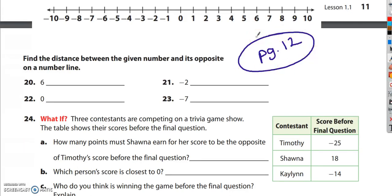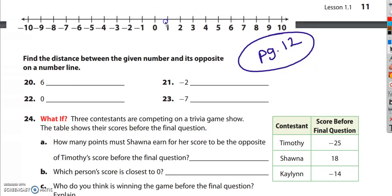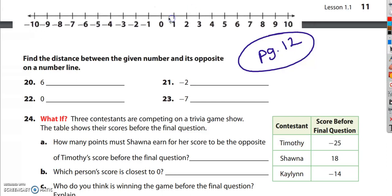Okay, the directions for 20 through 23 say, find the distance between the given number and its opposite on a number line. So I'm going to grab this number line right here, you can see me wiggling it back and forth. I'm going to use this number line to show how easy these can be.